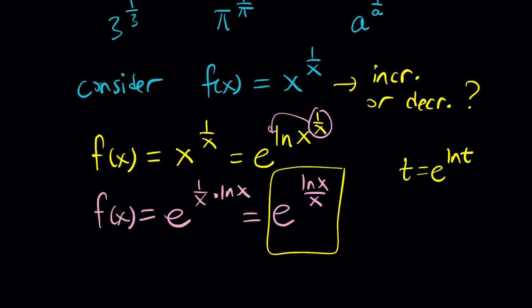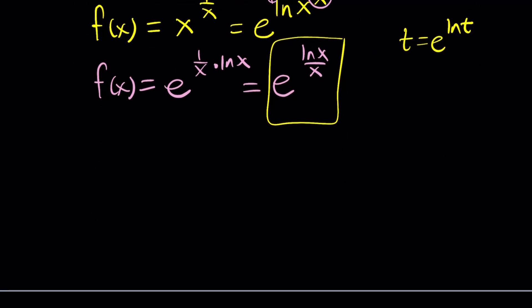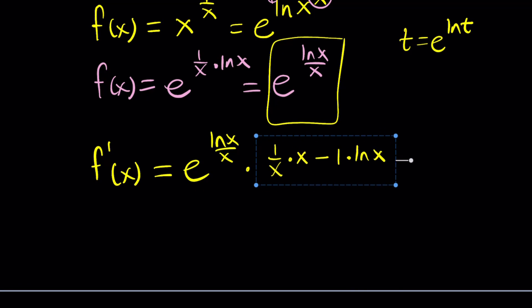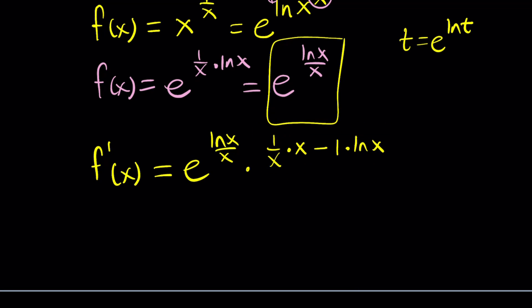This function is e to the power of something, so we differentiate using the rule: the derivative of e to the u is e to the u times u prime. Chain rule gives us the derivative of the inside, which is the derivative of ln x over x, requiring the quotient rule. That is: the derivative of ln x, which is 1 over x, multiplied by x, minus the derivative of x (which is 1) times ln x, all divided by x squared.